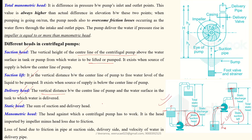Static head is the sum of both the suction head and the delivery head. Manometric head is the most important — it is the head against which the centrifugal pump must work to overcome friction losses so the water can be pumped to the target location. The total manometric head is the difference between the pressure at the inlet and pressure at the outlet, and it is always higher than the actual elevation difference because it must overcome friction losses.